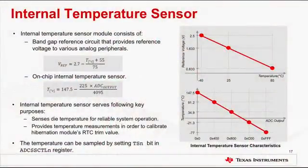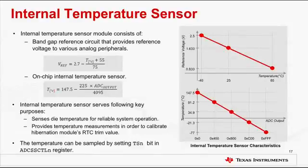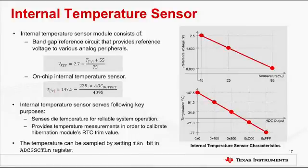Each ADC module has a temperature sensor that can be used to sense the die temperature for reliable system operation. It can also be used to obtain temperature measurements to calibrate the hibernation module's RTC trim value. The internal temperature sensor module consists of a bandgap reference circuit that provides reference voltages to various analog modules. The relation between the reference voltage and the die temperature is mathematically expressed by the first equation shown on the screen. In most applications, the internal temperature sensor can be used to provide a rough estimation of the die temperature, and the relation between temperature and ADC output code is expressed by the second equation shown on the screen.